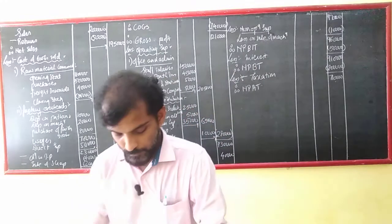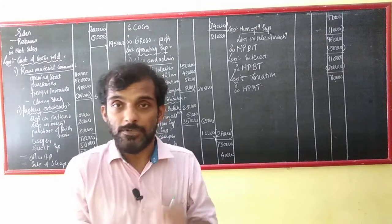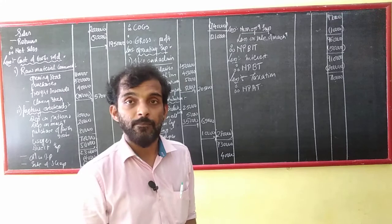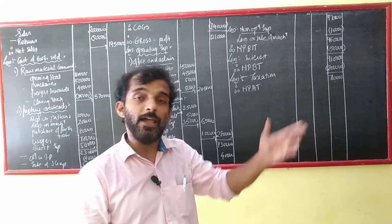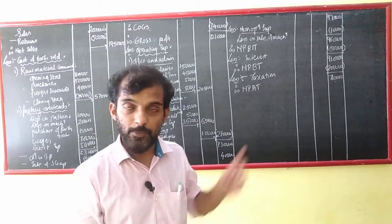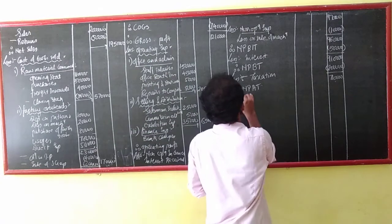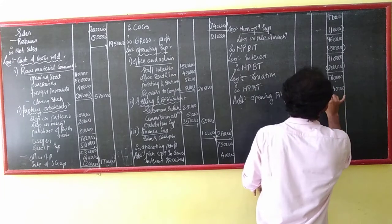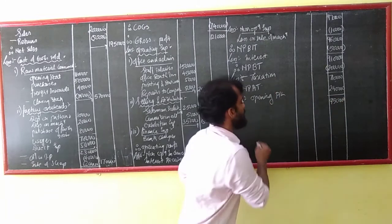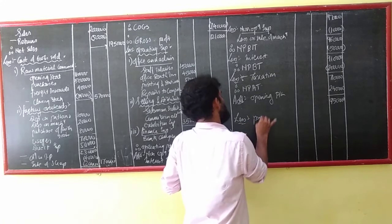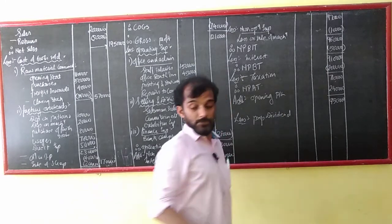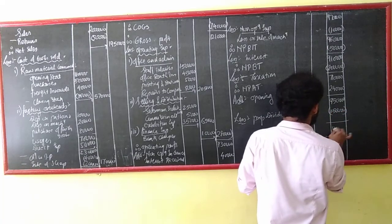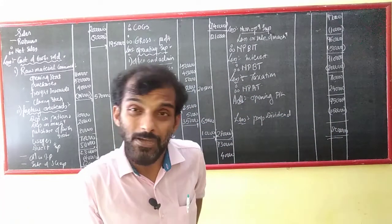Now for appropriation: profit and loss tax account is 2 lakhs. Proposed dividend: remember on the right-hand side there is 1 lakh. This year: 2 lakhs. So my answer here: add opening P&L balance of 2 lakhs — that means 9 lakhs will be the profit available for appropriation. Less proposed dividend, and then retained earnings — that is your Jammah profit balance, which is equity, because the shareholders are the owners of the company.